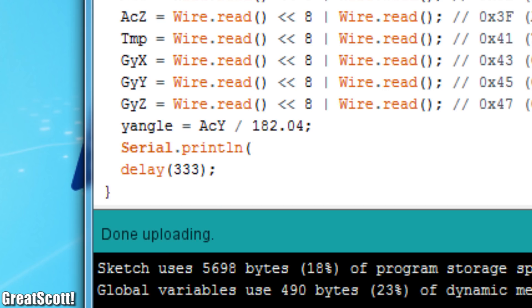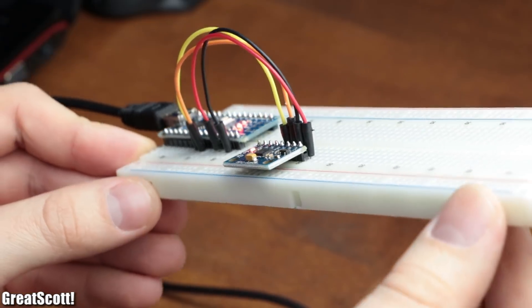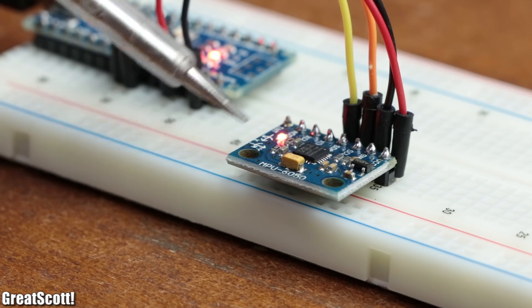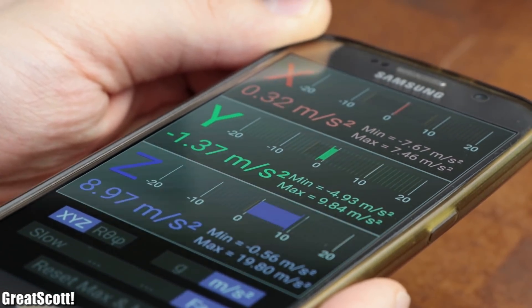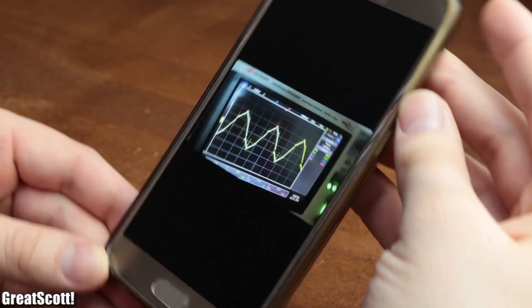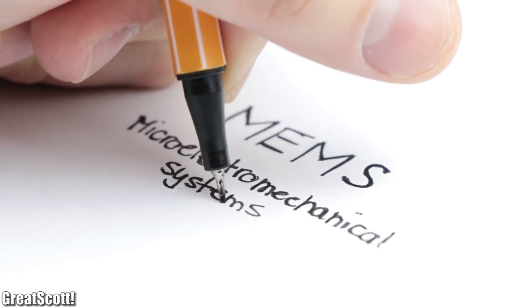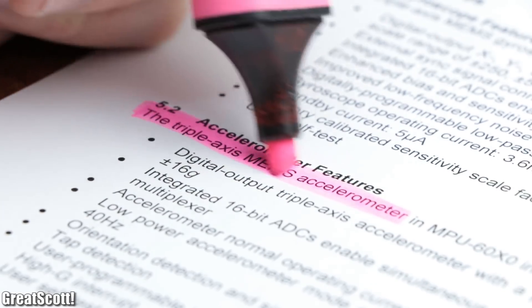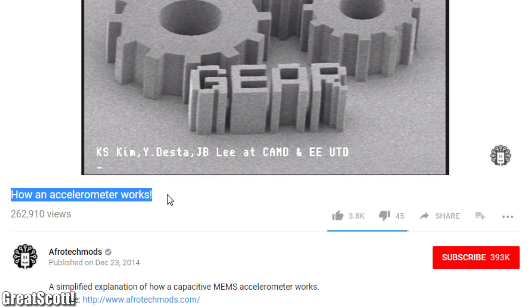Which means that by doing a bit of code editing, we can already create a serial monitor breadboard spirit level. And needless to say, such an accelerometer does also work in the x and z direction. Your smartphone, for example, utilizes such an accelerometer to automatically rotate the screen. And if you want to dig even deeper and understand what MEMS are and how an accelerometer is made up of them, then definitely check out Afrotechmods video about the subject.